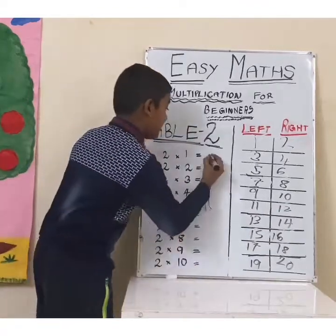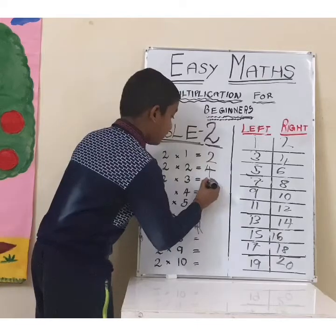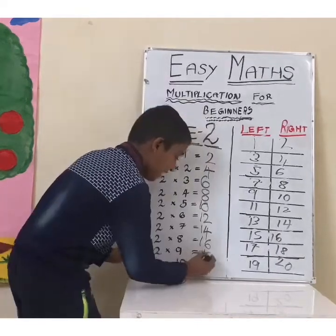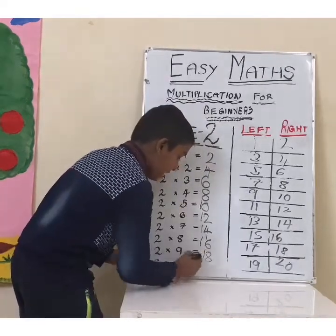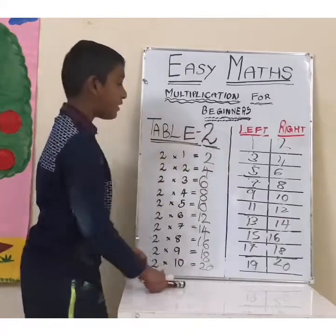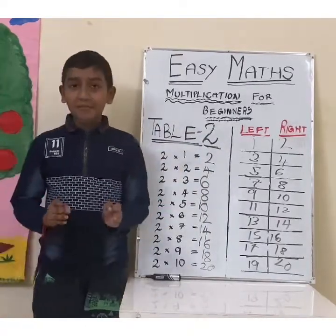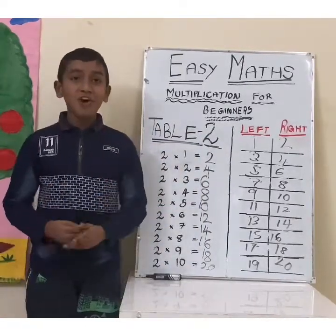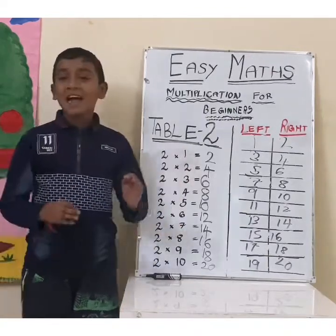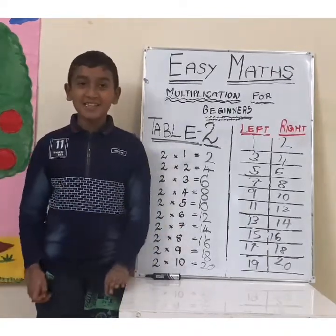So: 2 ones are 2, 2 twos are 4, 2 threes are 6, 2 nines are 18, and 2 tens are 20. This is how it works. From now on, you will not make any mistakes in this table and you don't need to buy a tables chart either.